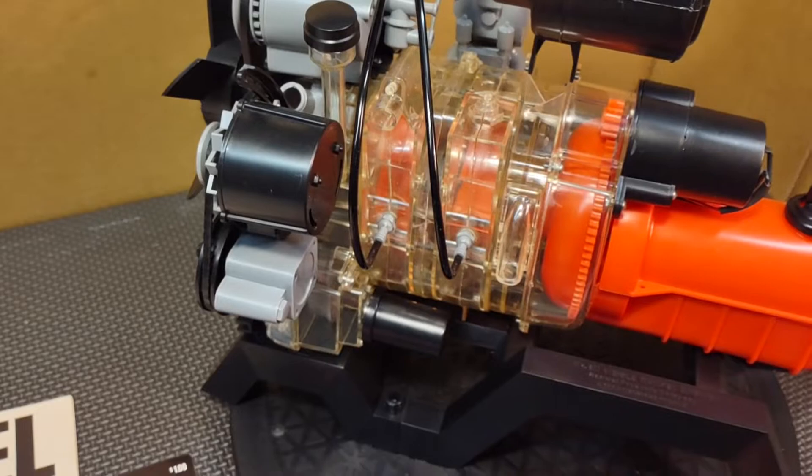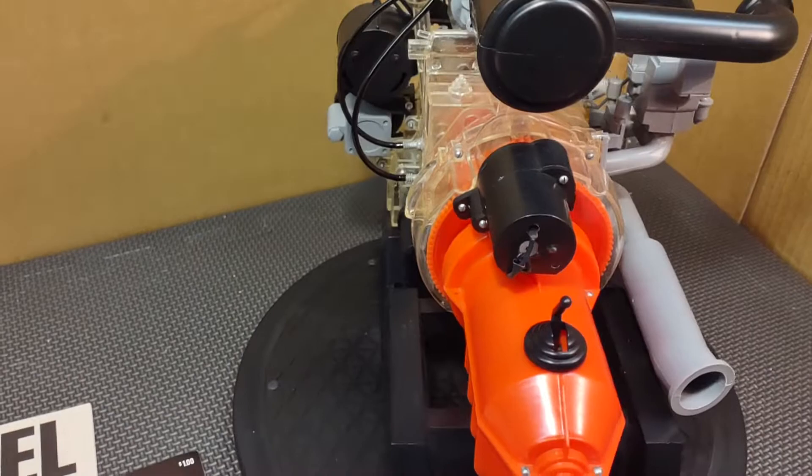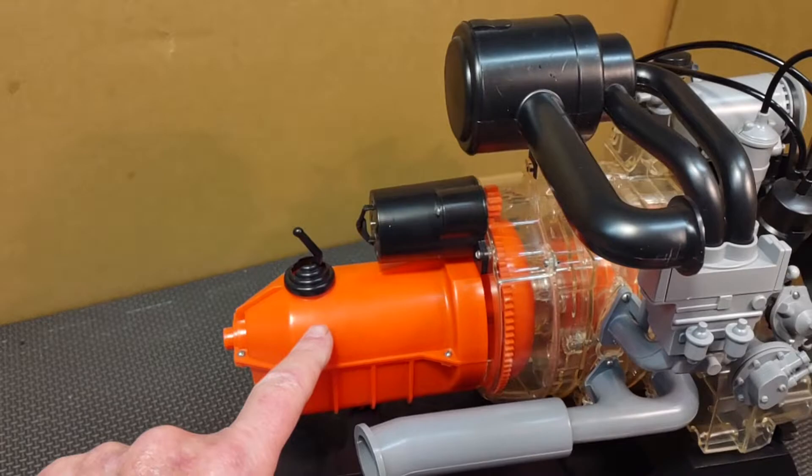It's operated with two C cell batteries here in the transmission housing. The motor, a little electric motor that makes it go round and round, is right here in the starter motor housing.